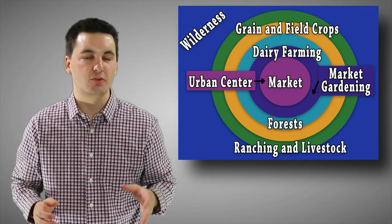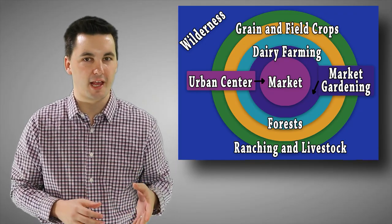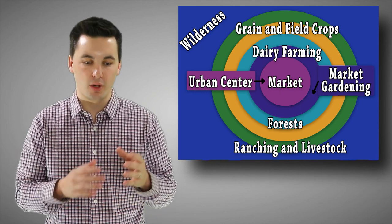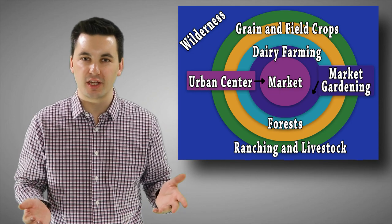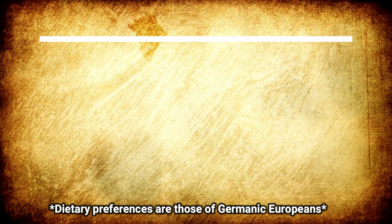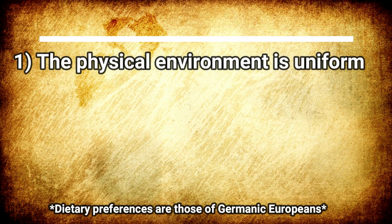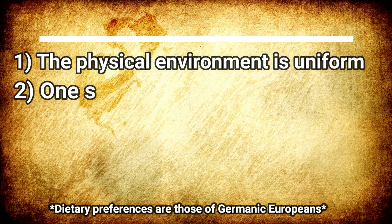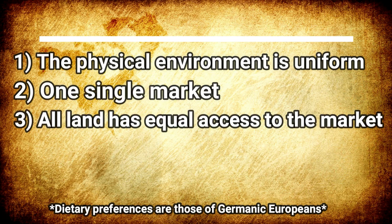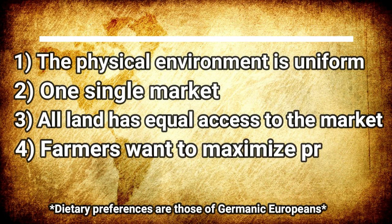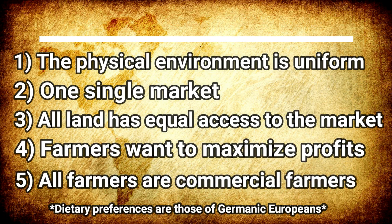Von Thunen's model of land use looks at how society utilizes land. This model was first proposed in a book called The Isolated State in 1826. Von Thunen based his model off a couple of assumptions: all land is flat, there's one single market, all land has equal access to the market, farmers want to maximize their profits, and all land has similar site characteristics.